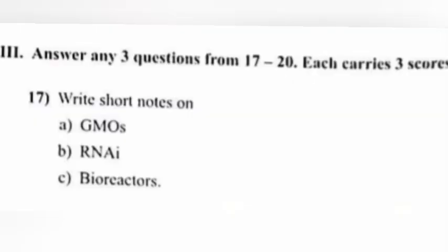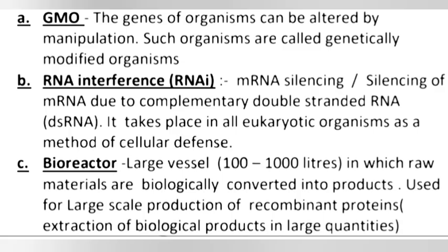Question 17: Write short notes on (a) GMOs, (b) RNAi, (c) Bioreactors. GMO: The genes of an organism can be altered by manipulation; such organisms are called genetically modified organisms. RNAi (RNA interference): Silencing of mRNA due to complementary double-stranded RNA. It takes place in all eukaryotic organisms as a method of cellular defense.